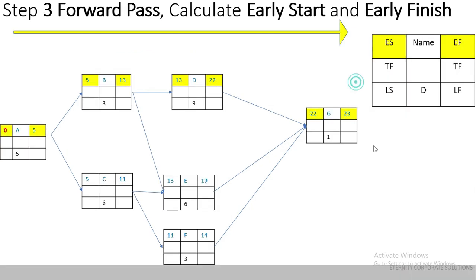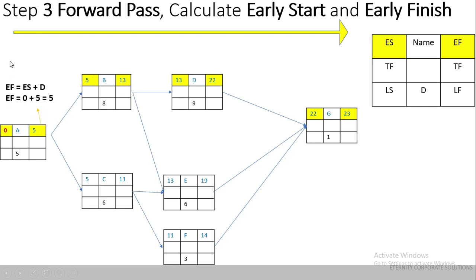In Step 3 we calculate the forward pass. The forward pass is used to calculate the early start and early finish of each activity, going from left to right. The first activity in the network is Activity A, and by convention we take the early start as zero — this is also known as the end-of-day convention in project management. The formula is: Early Finish = Early Start + Duration. So for Activity A: 0 + 5 = 5.